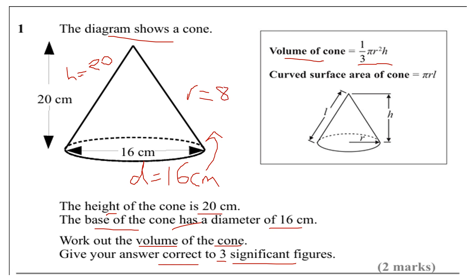We can now substitute these values into the formula to work out the volume. So volume equals one-third times π times 8 squared times 20.